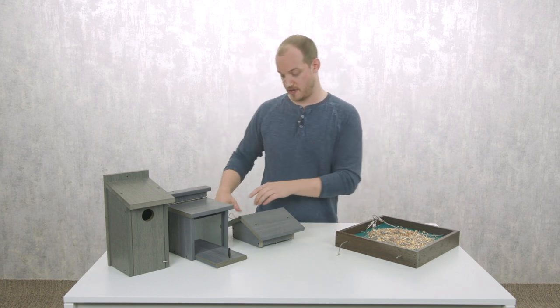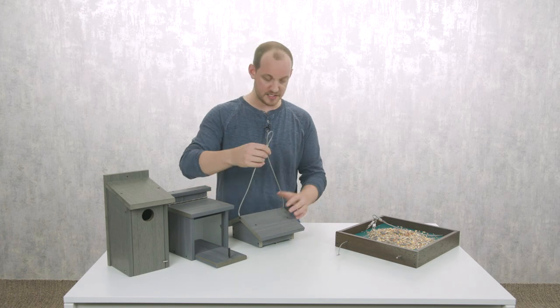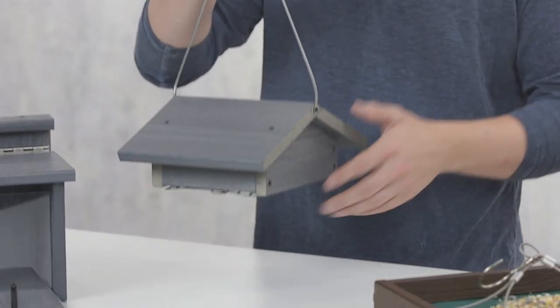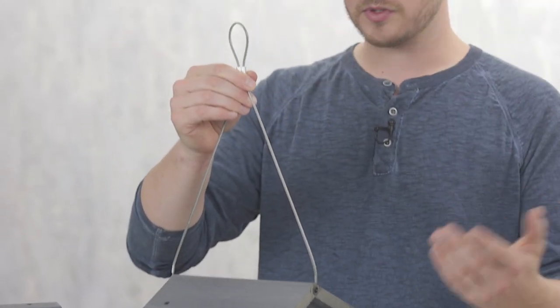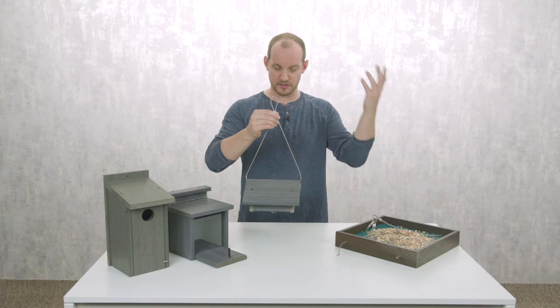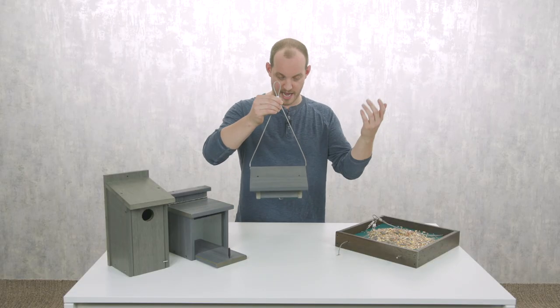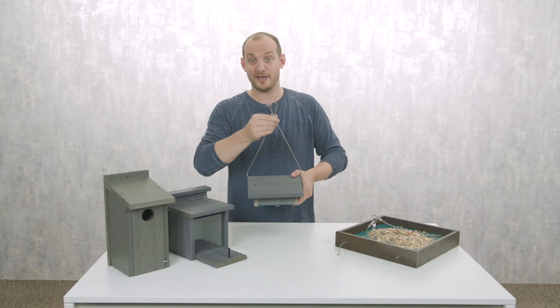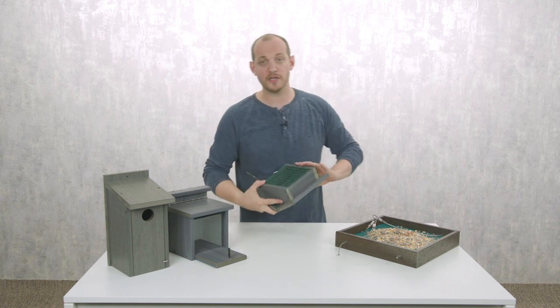All right, so moving on to the next one - this is the suet feeder. Again, this is another kind of wire hanging mount system, very simple. Just go find your favorite place in the lawn or on your deck or your porch and hang it up. That's the easy part.